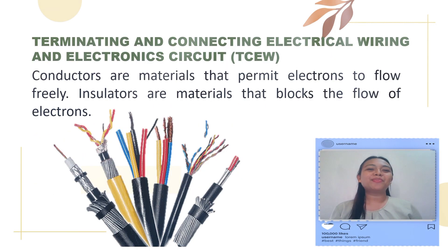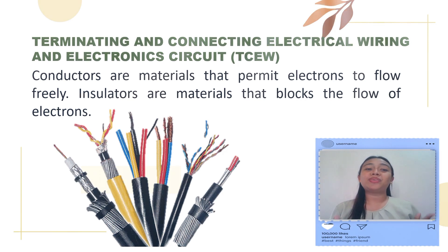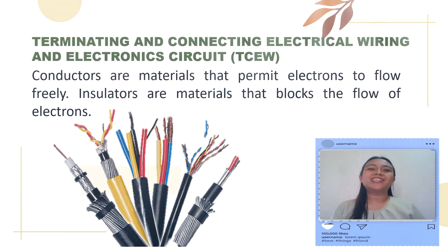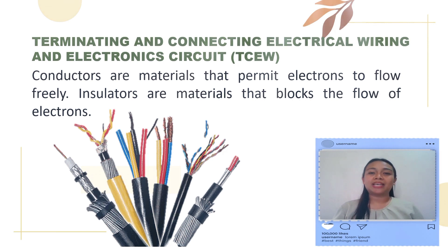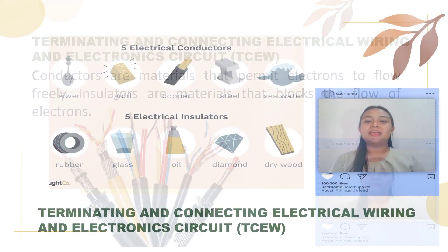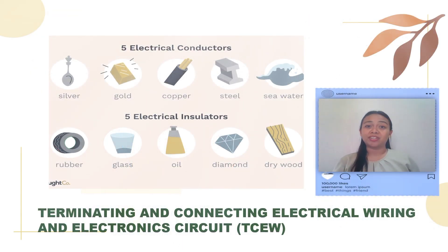In terminating and connecting electrical wiring and electronic circuits, we must also be familiar with the difference between conductors and insulators. Conductors are materials that permit electrons to flow freely, while insulators are materials that block the flow of electrons. Here are examples of conductors and insulators.